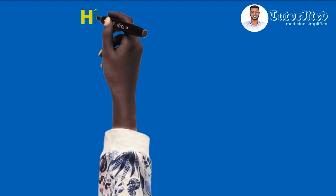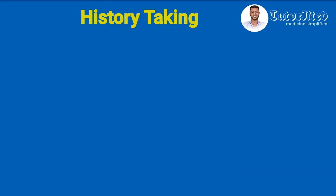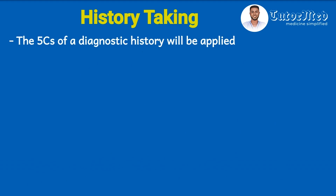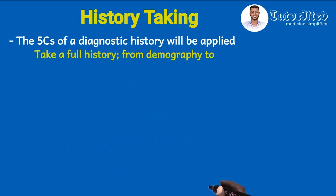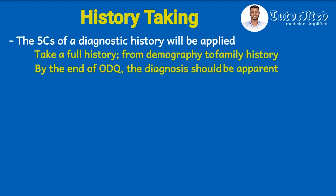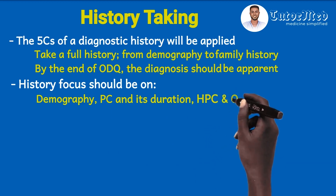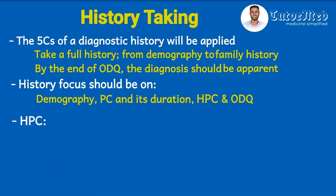Now that we've established the basic sciences and principles, we'll look at how a diagnostic history is taken when evaluating a patient with suspected cardiac pain. From our history taking lecture, remember the five C's of a diagnostic history — these will be applied here. Ensure you take a full history from the patient's demography to the family history. The HPC constitutes the first three C's: the first C being the characteristics of the presenting complaint, which in this case is likely angina pectoris or chest discomfort, and we'll use SOCRATES to characterize it.